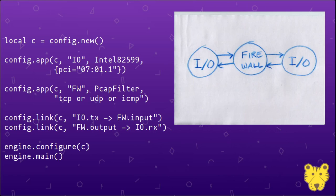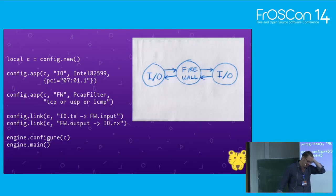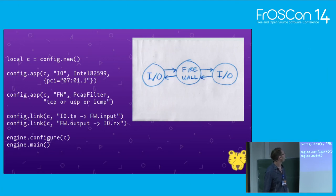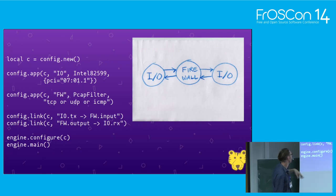To create your application, you combine instances of apps into what we call an app network. In the diagram on the left, you have two device interfaces connected by a firewall app — traffic coming into one device is filtered and sent out to the other. On the right there's code showing how to configure an app network using Snap — it has one firewall app and one I/O app — and it shows you everything you need to know to do bigger designs.